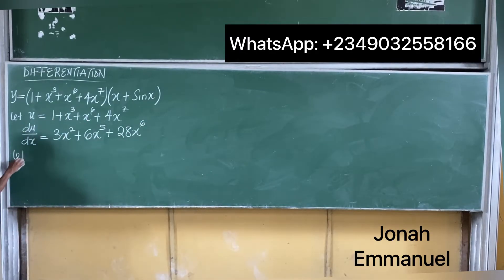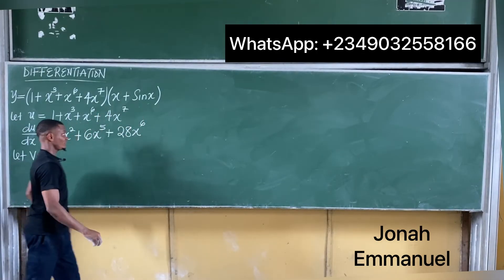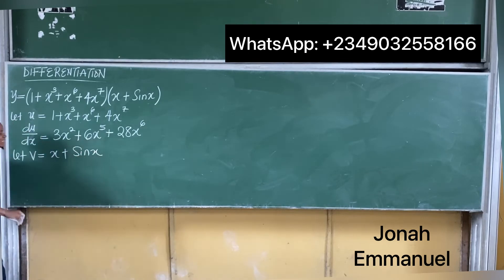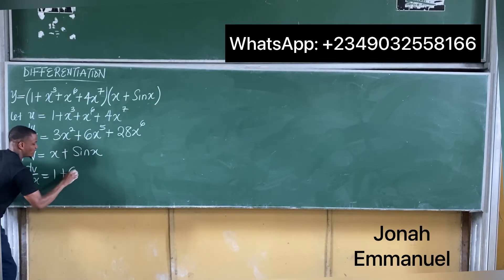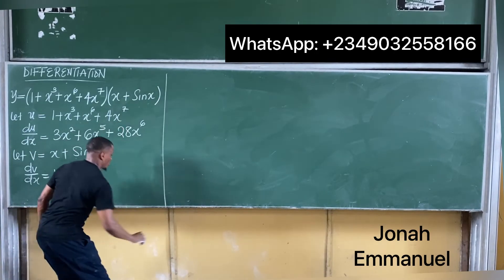Next, let v be equal to this term here: x + sinx. Let's differentiate. dv/dx equals - differentiating x gives you 1, plus differentiating sinx gives you cosx. So I have 1 + cosx.